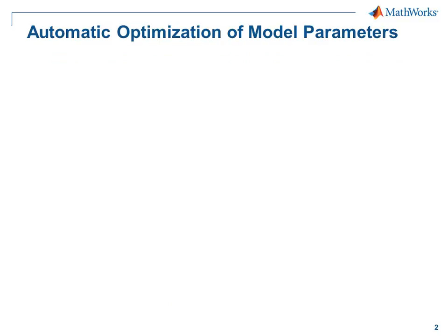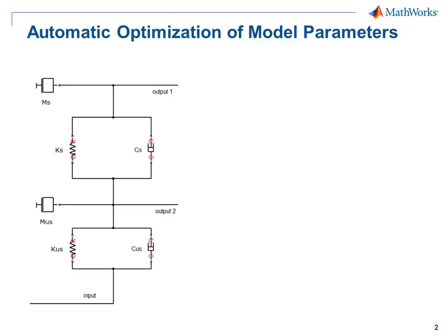Let's start with a simple explanation of the problems we are going to discuss today. Let's say you have modeled your design in Simulink. In this case, we are seeing a simple Simscape model of a car suspension. Now you want to optimize your design to meet several different requirements. One requirement could be a time domain requirement — for example, you want some signal from the model to fall within prescribed bounds. You run the simulation, look at the signal, and notice it is not quite meeting the requirements.